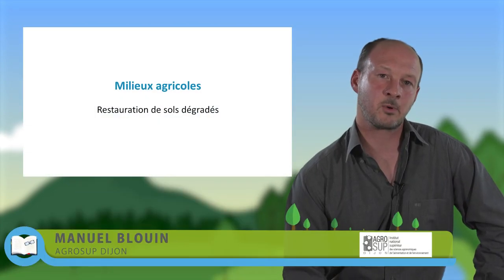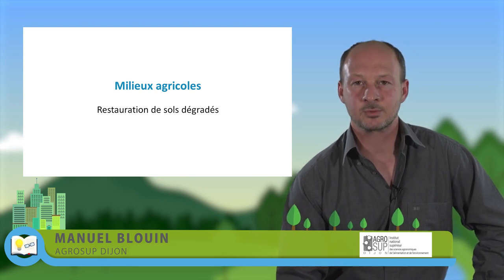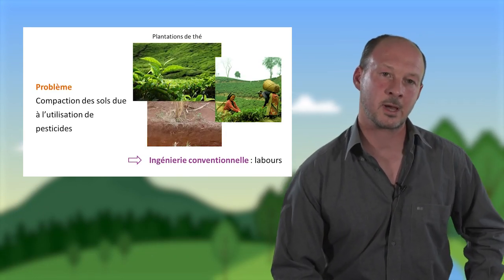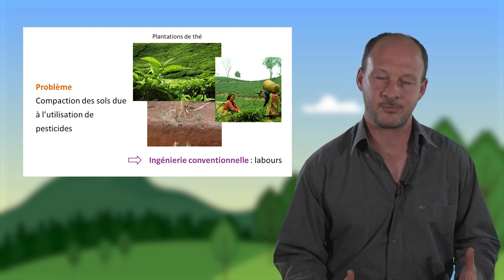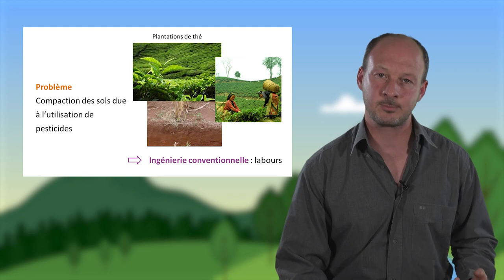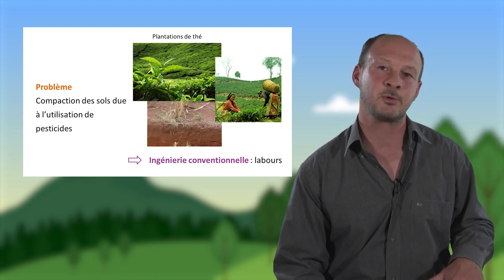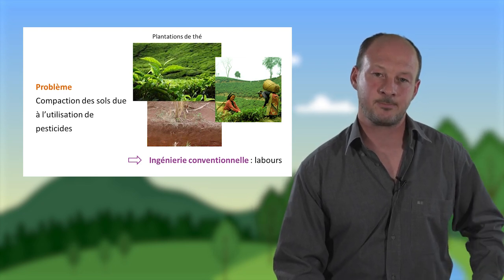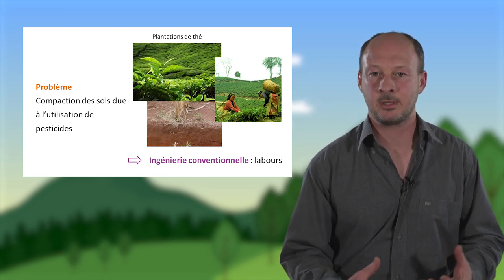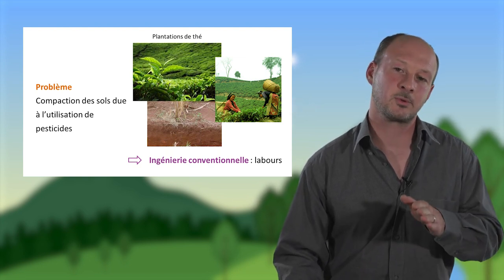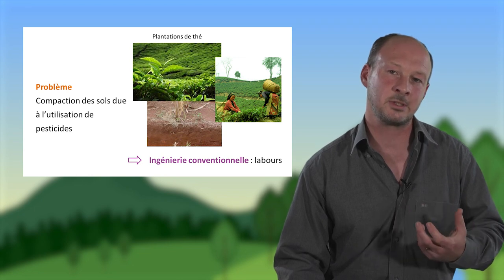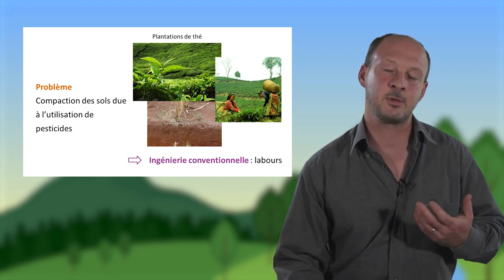Sur les milieux agricoles, un problème fréquemment rencontré est la dégradation des sols et notamment leur compaction. Cette compaction a été observée dans les milieux tropicaux, où la porosité et la vie du sol sont très importantes pour maintenir la fertilité. En utilisant des pesticides, on a détruit la faune du sol, on a perdu la porosité, les sols se compactent et les racines des plantes ne peuvent plus se développer correctement. Une solution envisagée par l'ingénierie conventionnelle serait le labour, mais sur des plantations pérennes avec des plants de thé installés pour plusieurs années sur des pentes raides, le labour paraît difficile et pourrait favoriser des processus d'érosion.